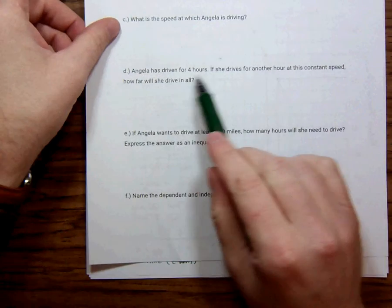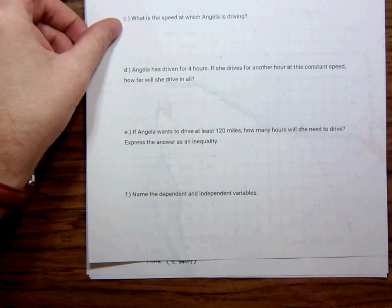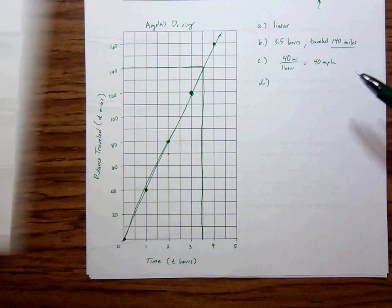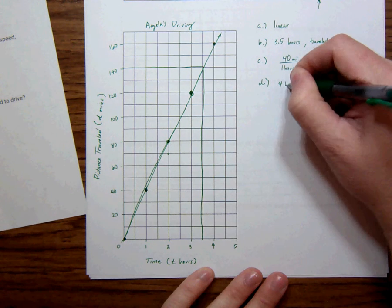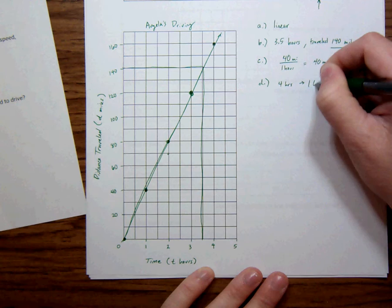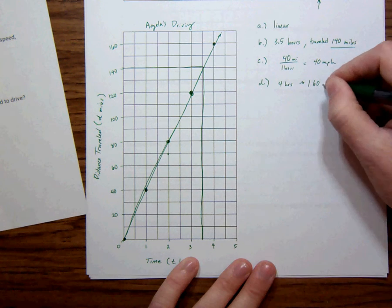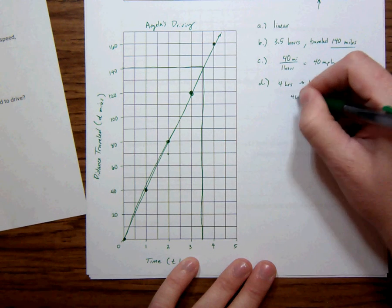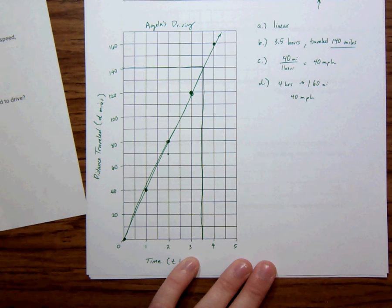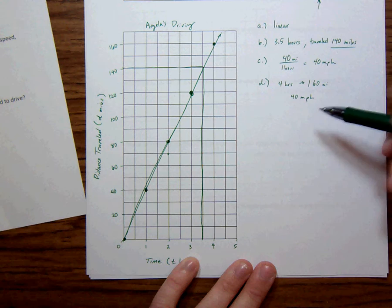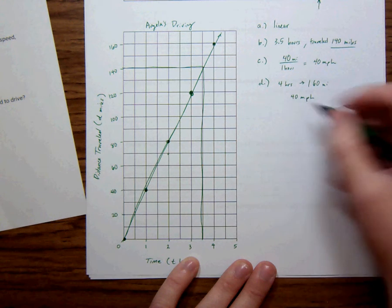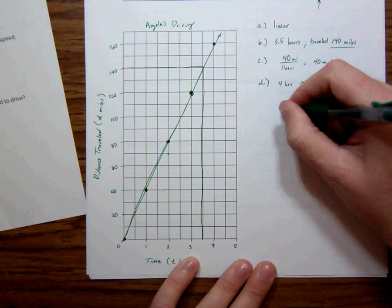Angela has driven for 4 hours. If she drives for another hour at a constant speed, how far will she drive at all? So she's driven 4 hours and she's at 160. So 4 hours, she's at 160 miles. We go 40 miles per hour, right? And so basically, we're just going up one more hour. So in 5 hours,